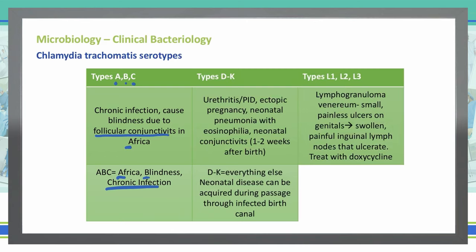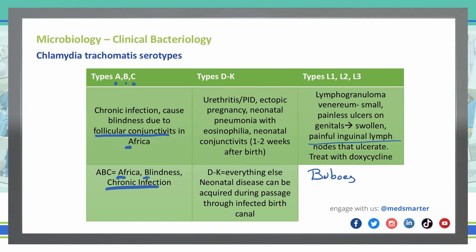The other serotypes we'll discuss are types L1, L2, and L3. These specifically cause lymphogranuloma venereum. Lymphogranuloma venereum presents as small, painless ulcers on the genitals, which then lead to swollen, painful inguinal lymph nodes. Those lymph nodes can ulcerate, and we call those buboes. To treat lymphogranuloma venereum, we use doxycycline.